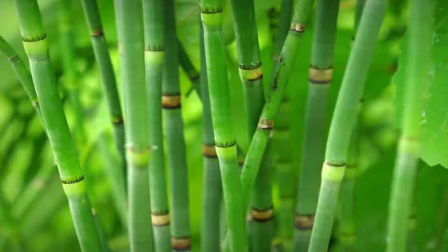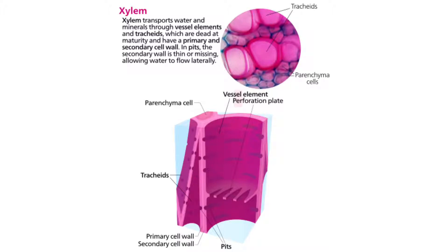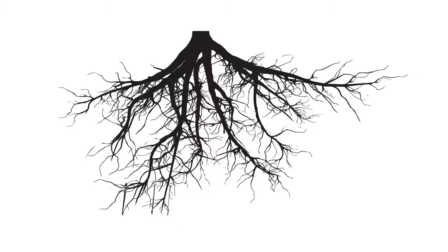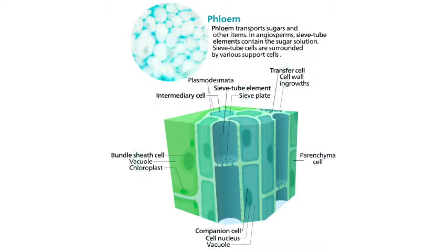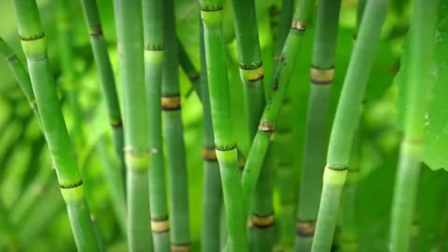Stems connect roots to leaves and also contain vascular tissue. Water and minerals move upward in the xylem from the roots to the rest of the plant. Phloem carries the sugar made in the leaves during photosynthesis to the roots and the rest of the plant. Stems also hold the plant upright so that leaves can reach sunlight, and some stems store water or sugar until it is needed by the plant.